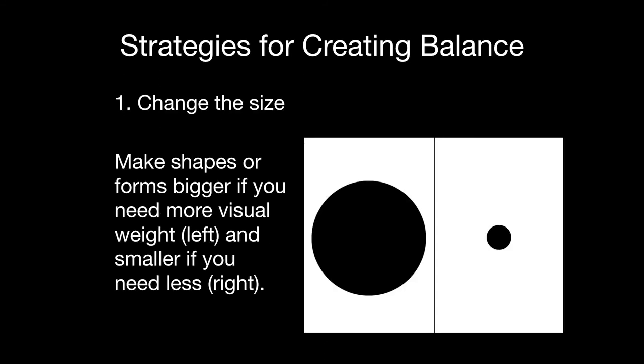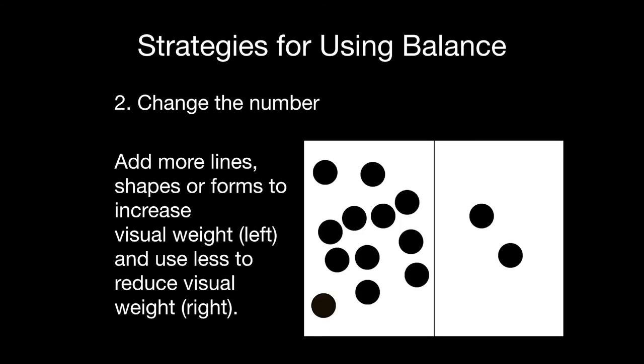The first strategy for creating balance is to change the size of something in your composition. If you need more visual weight you can make shapes bigger, or make them smaller if you need less — as you see on the screen, that big circle on the left has much more visual weight than the little one on the right. The second thing you can do is change the number of things in your composition — lines, shapes, forms. If you want to increase the visual weight, use more things; if you want to reduce it, use fewer things. The left hand side has more visual weight because of the number than the right hand side.